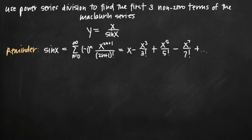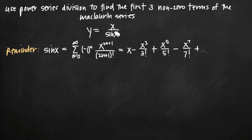Today we're going to talk about division of power series. In this particular problem, we're going to use power series division to find the first three non-zero terms of the Maclaurin series. We have the equation y equals x divided by sine of x, and we need to use power series division to find the first three non-zero terms of this Maclaurin series.